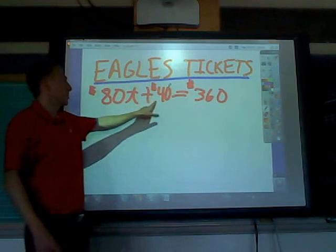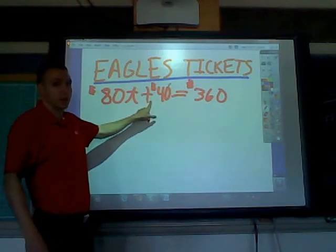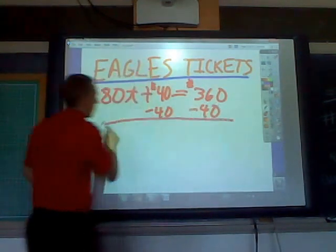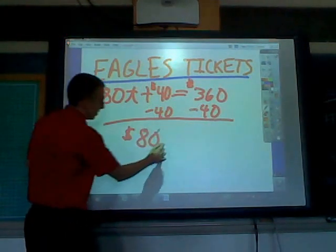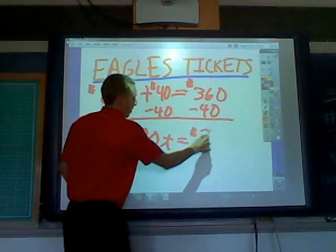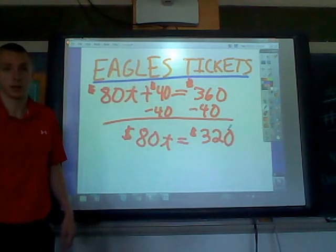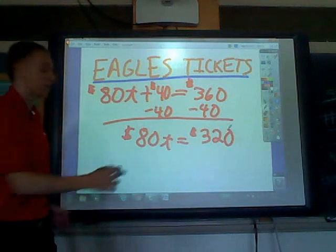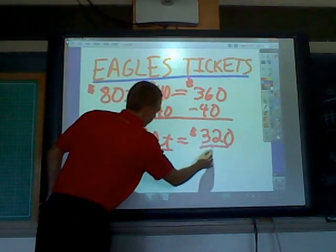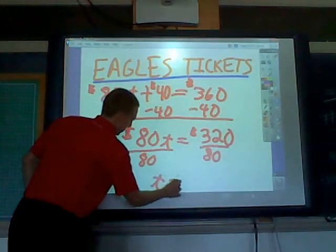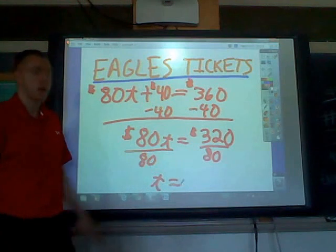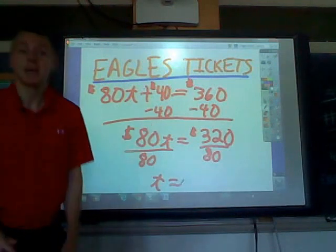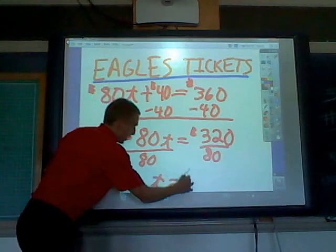Same process here: we want to subtract 40 because it's adding 40, so we undo that operation. Minus 40 on both sides, and you get 80t equals $320. Now it's multiplication — we want to undo that step, so we divide by 80. 80 divided by 80 gives us 1t, and 320 divided by 80 — you can use your calculator — equals 4. So t equals 4.